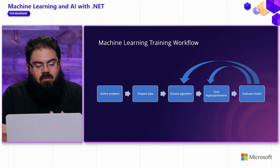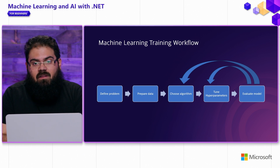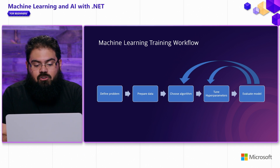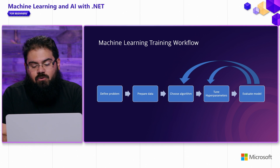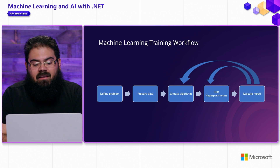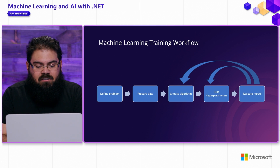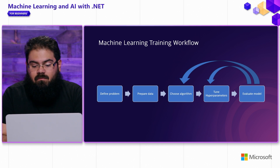Once you have the problem and the dataset that's going to help you train your model, you go through the process of choosing an algorithm. Depending on the problem — whether that's categorizing values or predicting a numerical value — you're going to choose a different algorithm. In addition to that, you're going to go through the process of tuning hyperparameters. Hyperparameters are just settings that help guide the algorithm during the training process in order to come out with the best model for your dataset. Then you need to evaluate that model and see if it's performing up to your standards.